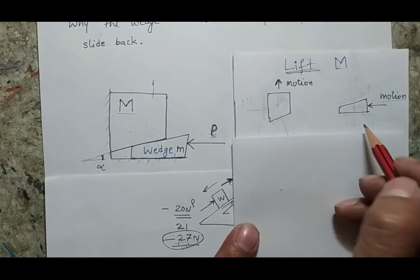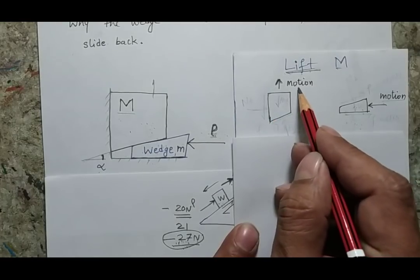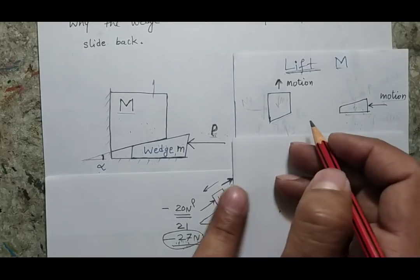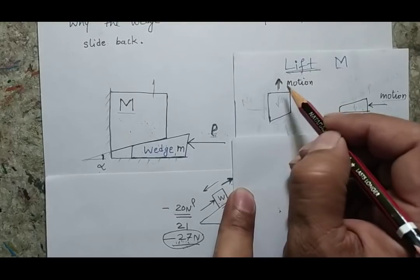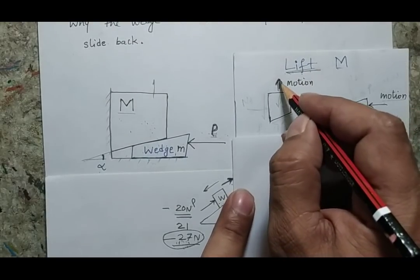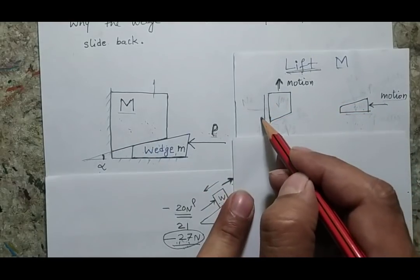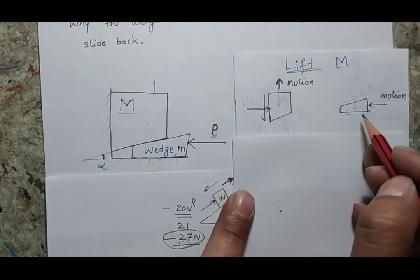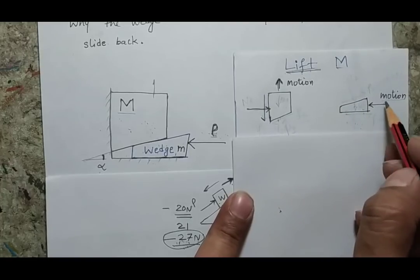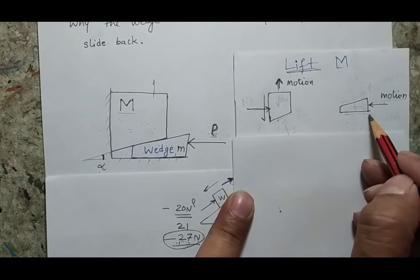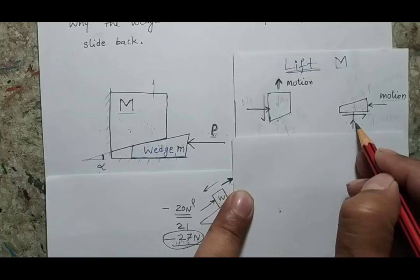If the equilibrium breaks and the body starts lifting, the body goes upward. Therefore, the friction from the wall on the body will be in the downward direction, and there will be a normal reaction. Since the wedge goes toward the left, the friction from the ground will act in the rightward direction, and there will also be a normal reaction at that surface.